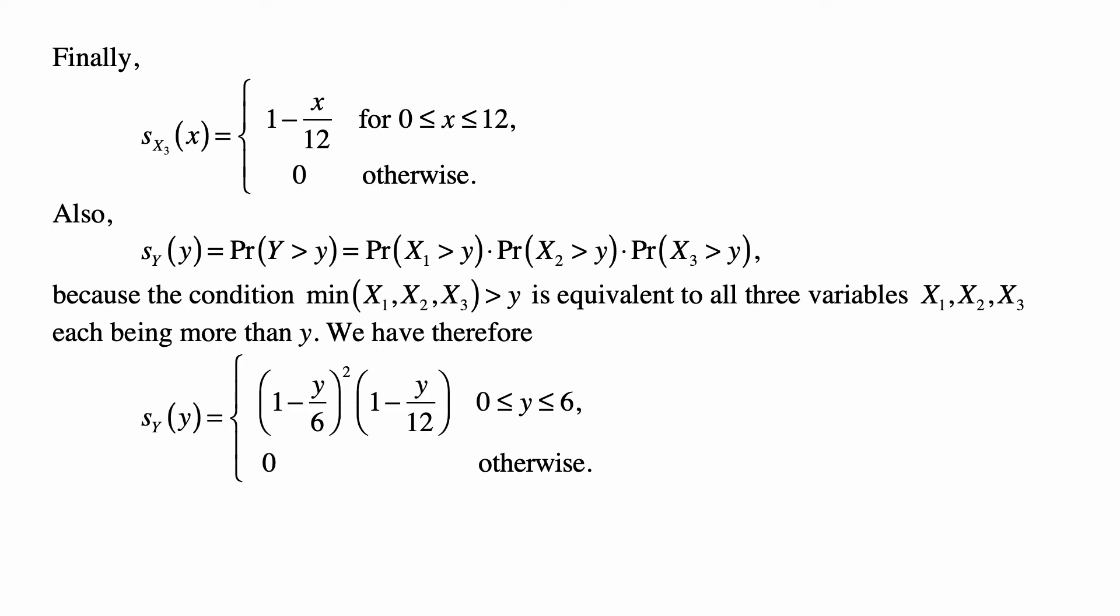Also, s sub Y of y is the probability that Y is more than y, which is the probability that X1 is more than y times the probability of X2 is more than y times the probability of X3 is more than y. Because the condition that minimum of X1, X2, X3 is more than y is equivalent to all three variables, X1, X2, and X3, each being more than y.